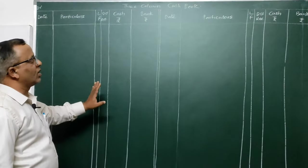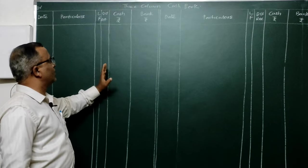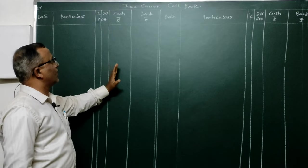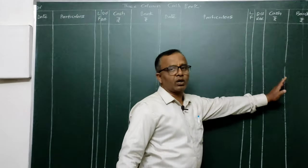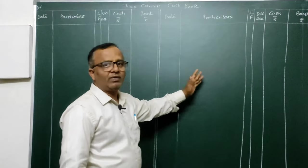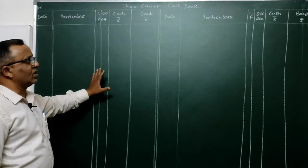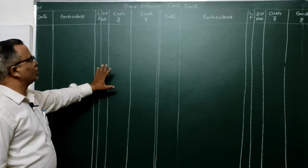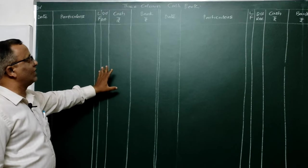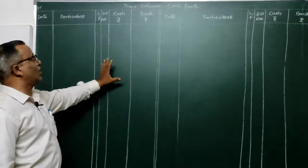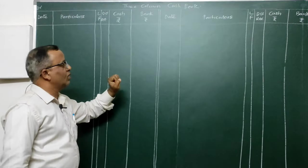We are calling this a three column cash book because we have three columns on the debit side: one for discount, one for cash, and one for bank. Similarly on the credit side: discount, cash, and bank. Since we have three columns on both sides, we call it a three column cash book. So we have three accounts: discount, cash, and bank.